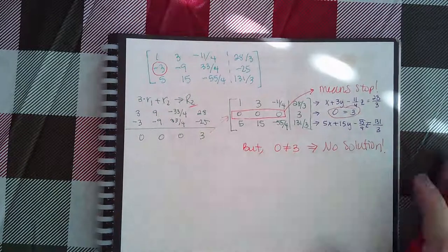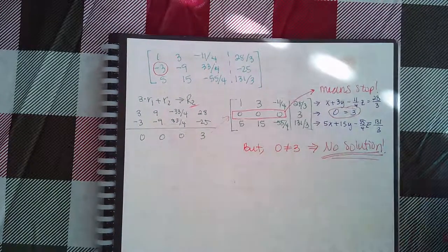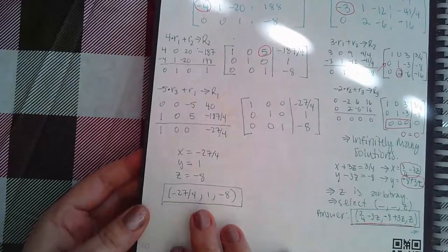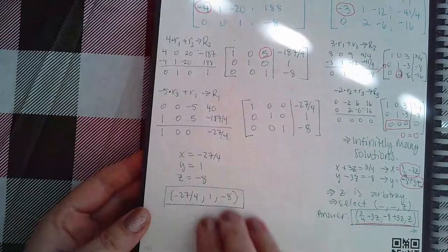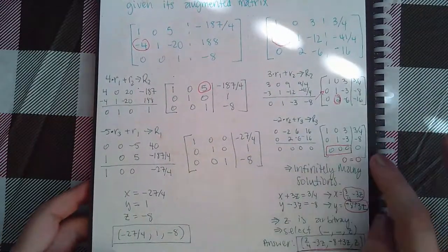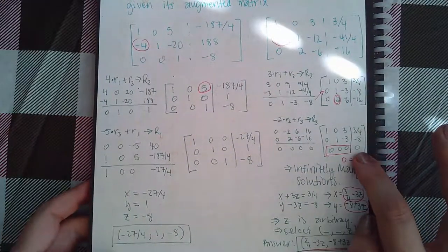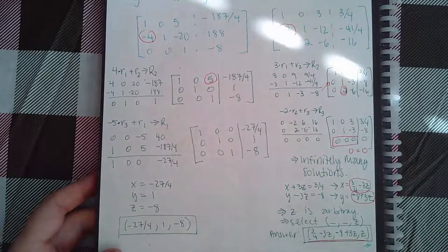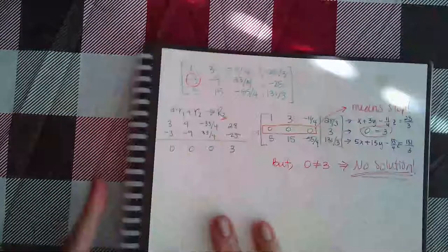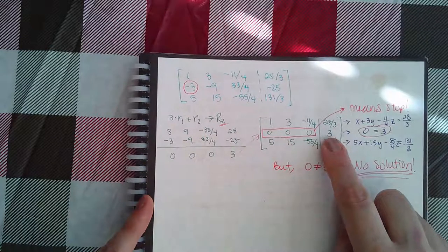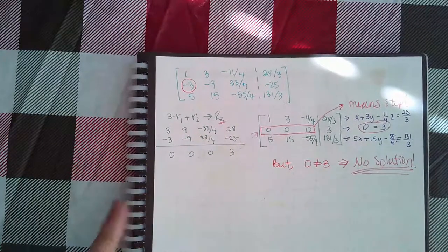So you've got the three different cases: when you solve it and actually get a number, that's one unique solution. If you go through all of it and get zero zero zero with a zero on the other side in that row, it's infinitely many solutions — and you do have to figure out how to solve for the other variables. However, if you get zero zero zero and then a non-zero number, that means no solution and there's nothing further to do.